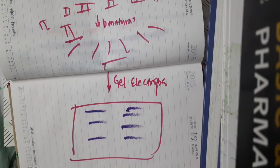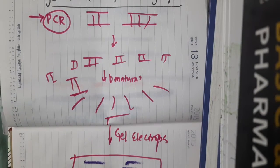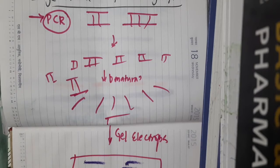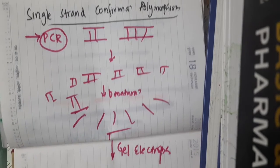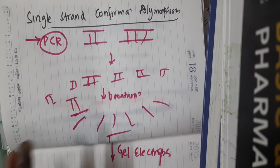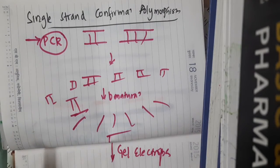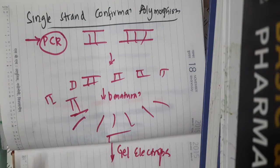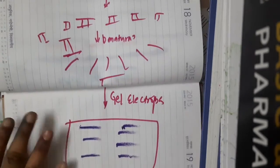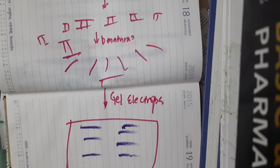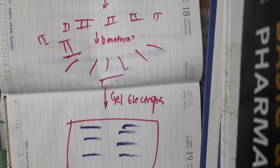It will classify. Based on this, you can find the single strand polymorphism by using specific primers which you suspect in the PCR. This is about single strand conformation polymorphism, and it is visualized with the help of gel electrophoresis. Thank you guys for watching my lecture.